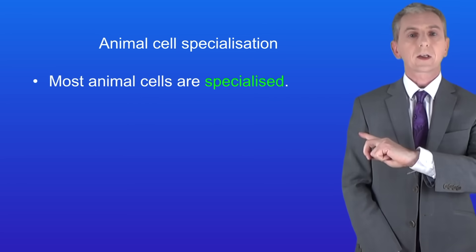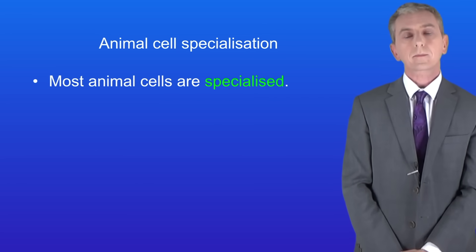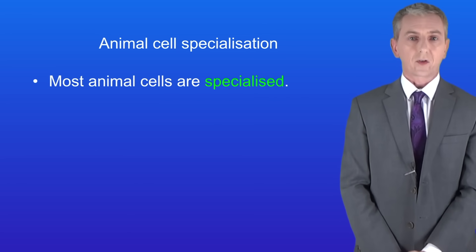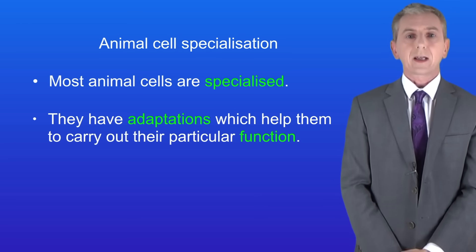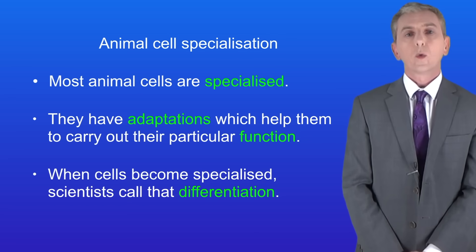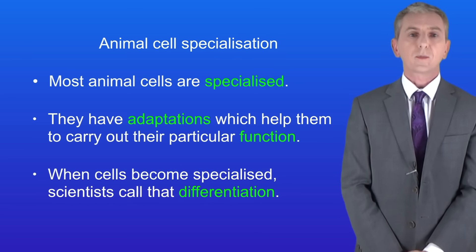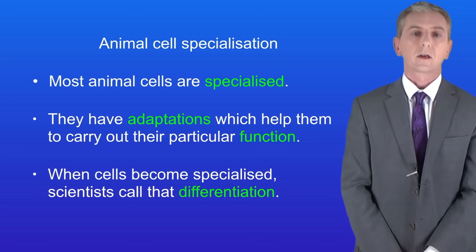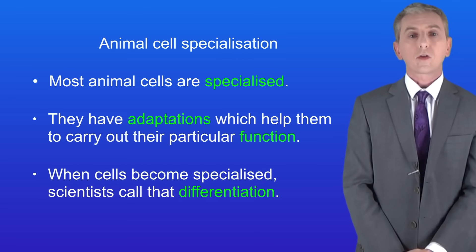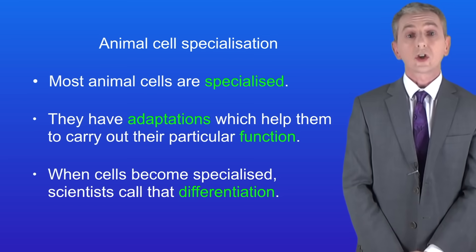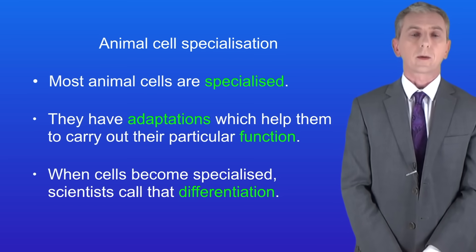Here's the first key idea that you need to understand. Most animal cells are specialized — in other words they've got adaptations which help them to carry out their particular function. When cells become specialized, scientists call that differentiation. So we're going to look at three specialized animal cells which are each adapted to carry out their function.